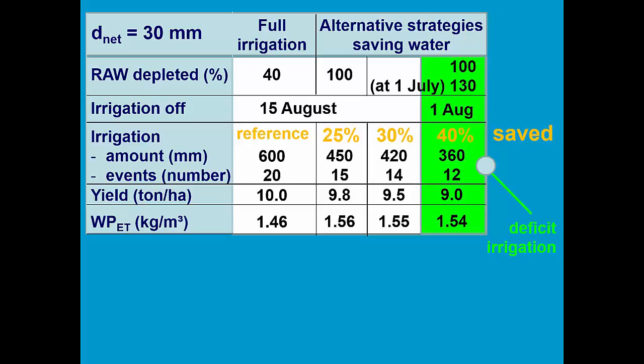This last strategy is a typical example of deficit irrigation, in which we save a lot of water, in this case 40%, which results of course in a decline of the productivity. But that decline is only 10% and small with reference to the saved water.